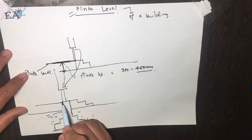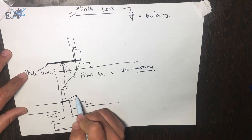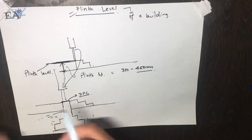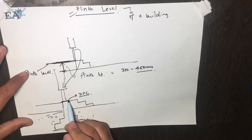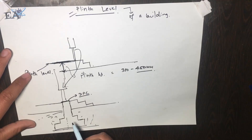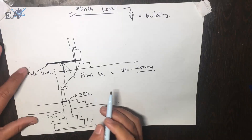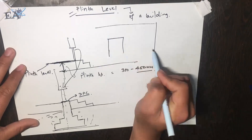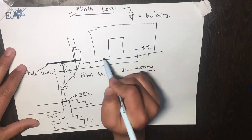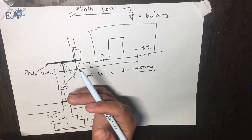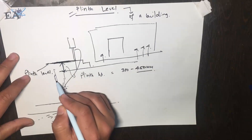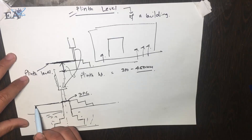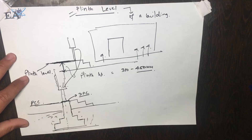In a wall structure, at the plinth level you have to do damp proofing, which is called DPC — Damp Proof Concrete. I'll make a separate video on how DPC is done. You make a concrete layer and add some chemical to it. This DPC prevents moisture from rising up the wall by capillary action. Without it, water can seep up over many months or years, causing seepage on the wall, so we provide DPC at this level.